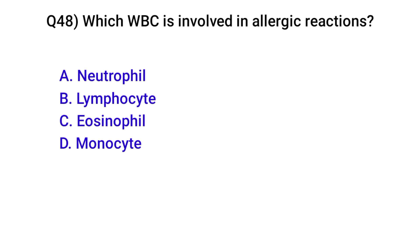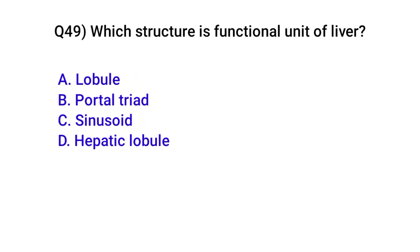Question number forty-eight: Which blood cell is involved in allergic reactions? Correct option is C: Eosinophils. Question number forty-nine: Which structure is the functional unit of the liver? Correct option is D: Hepatic lobule.